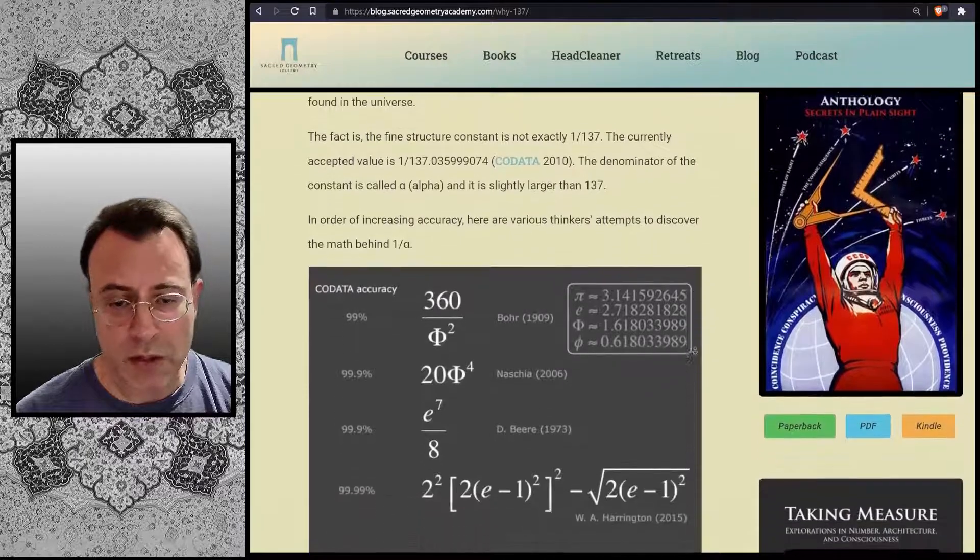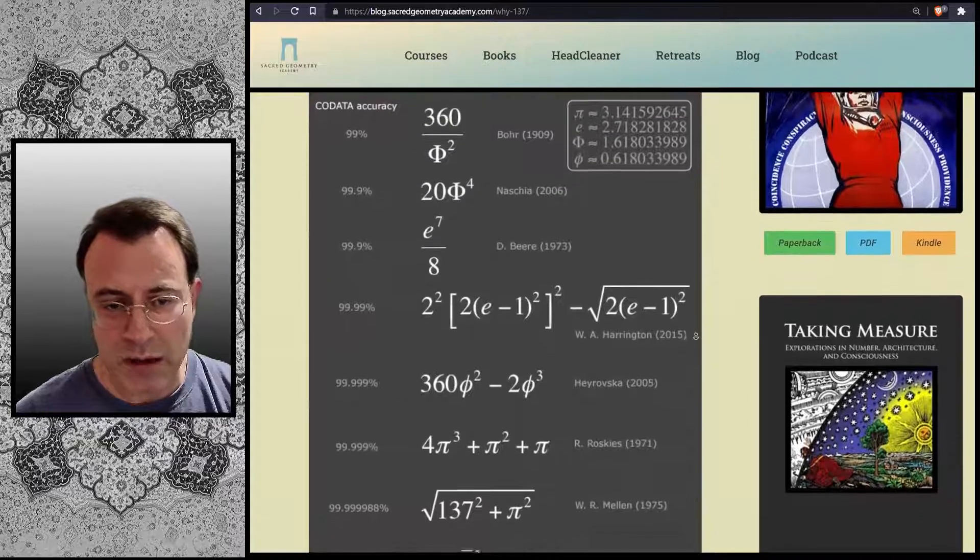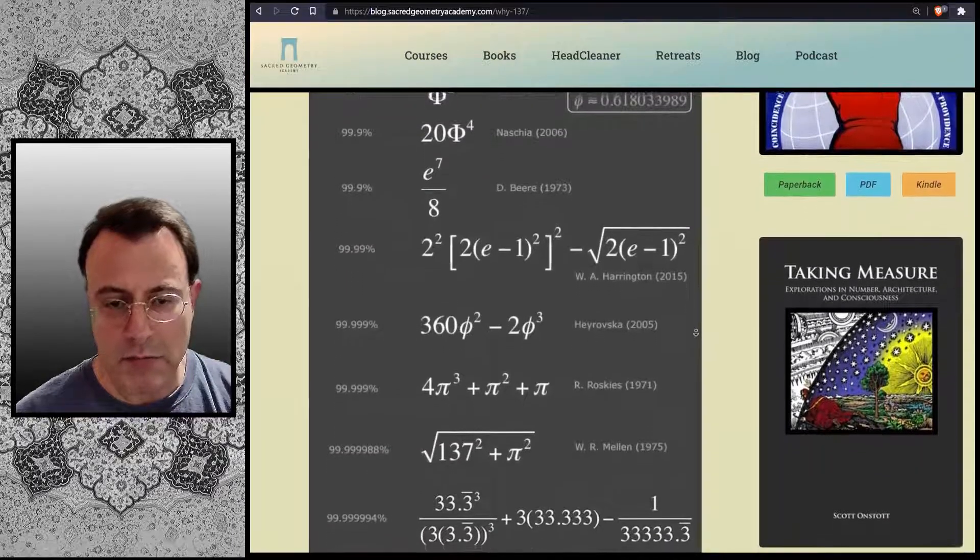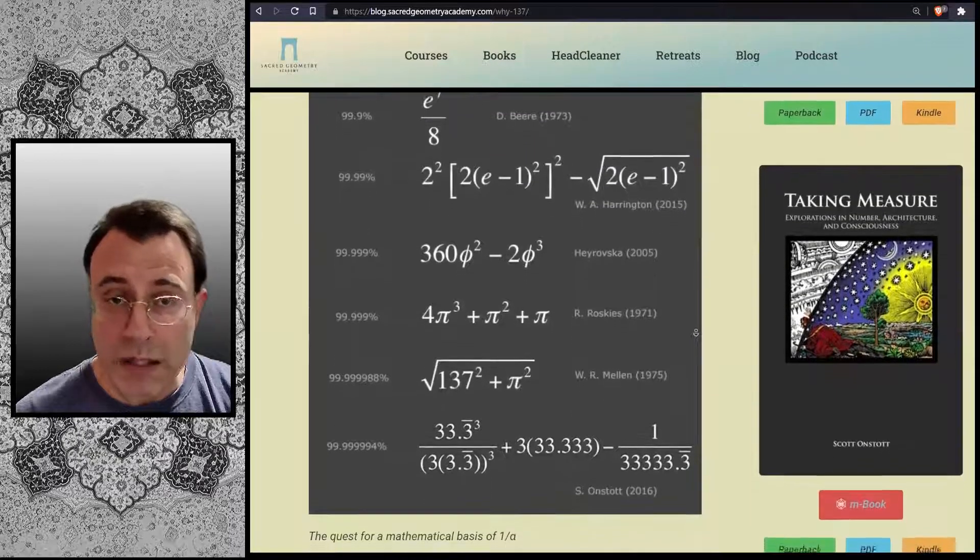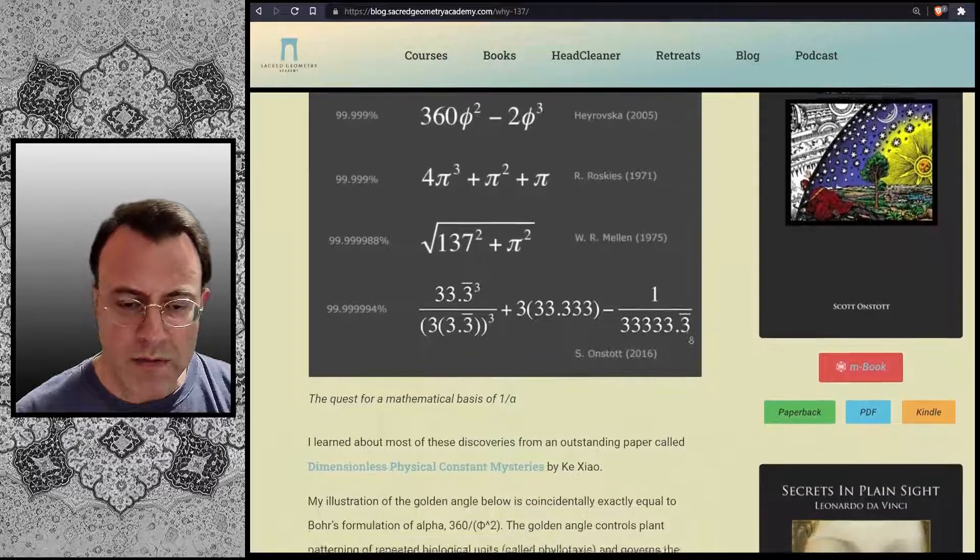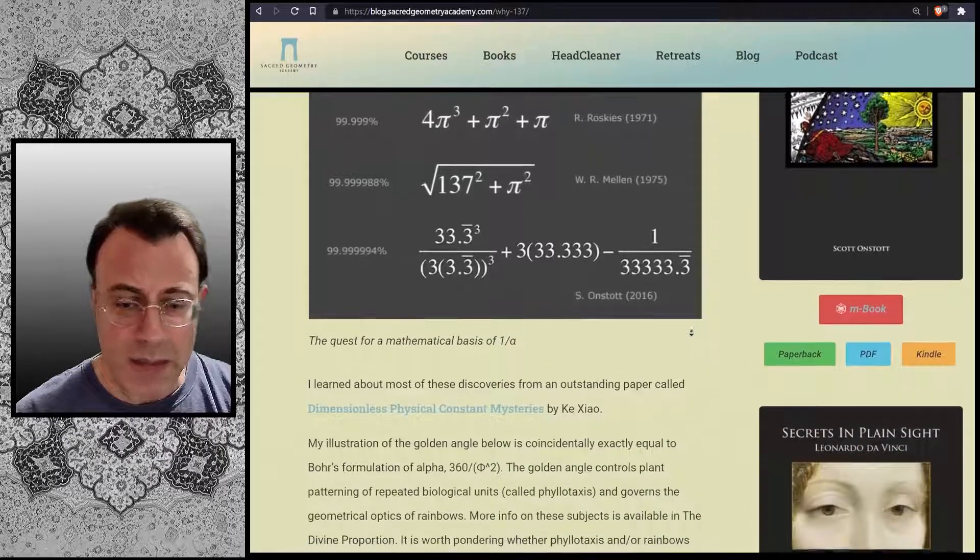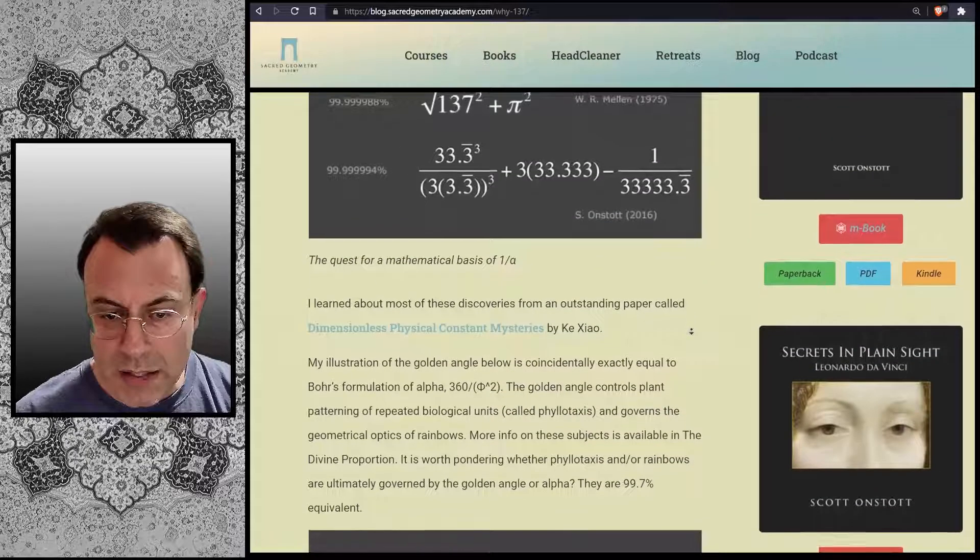And there's a graphic here that shows numerous different equations that involve phi, E, 1 over phi, pi, and all 3's, which is my equation. I learned about most of these discoveries from an outstanding paper called Dimensionless Physical Constant Mysteries by Yi Zhao.